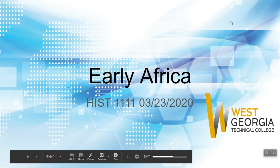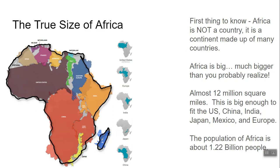Let's get on with the lecture. We're talking about early Africa, and the first thing you've got to know is the true size of Africa. Africa is a lot bigger than you think. A lot of people think of Africa as a country, but it's actually a continent made up of many different countries. Africa is 12 million square miles — big enough to fit the United States, China, Europe, and India inside it. Africa also has 1.2 billion people, so don't think of it as deserted or abandoned.